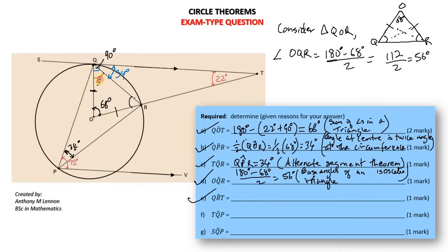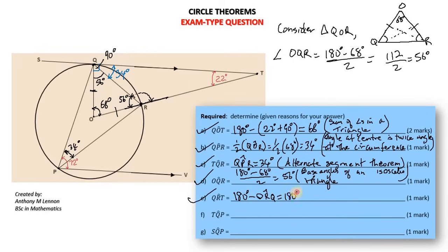So this angle is 56 degrees and this angle is 56 degrees as well. Now we can find angle QRT. We have a straight line here, and angle ORQ of 56 degrees along with angle QRT form 180 degrees — they are adjacent angles on a straight line. So angle QRT equals 180 degrees minus angle ORQ, which is 180 minus 56 degrees, which equals 124 degrees. Reason: adjacent angles on a straight line.